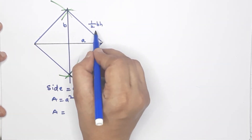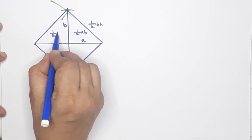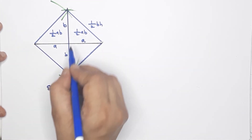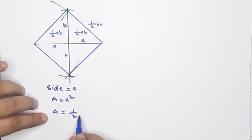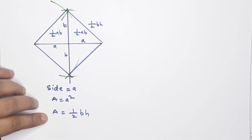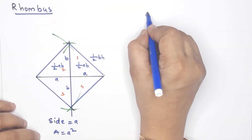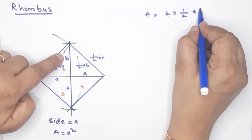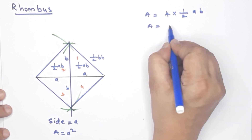Area equals half base into height. We have half A times A, then half A times B. Here we have 2A and 2B — the two diagonals. How do we do this? With half base into height — one triangle. How many triangles are here? We have 4 triangles: 1, 2, 3, 4 triangles.